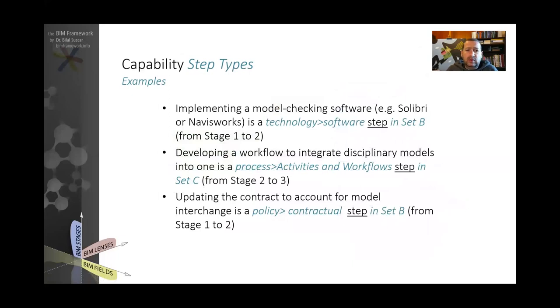These are three examples of step types. If we want to implement a model checking software, for example, if we implement the Solibri Model Checker or Navisworks Manage, this is actually a technology step within the software. It's a step, and it's in set B, meaning it is from stage one to stage two. So if someone is at stage one doing modeling, and now they want to move into collaboration, one of the steps they need to implement is adopt additional software on top of, for example, the Revit and ArchiCAD and Vectorworks.